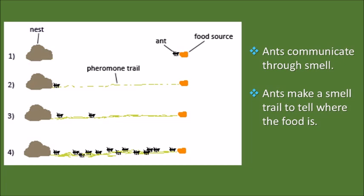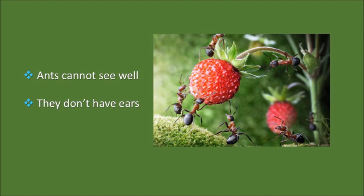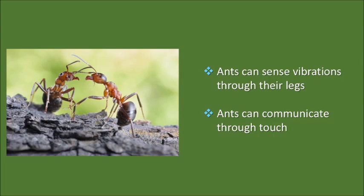Ants cannot see well and cannot hear well because they don't have ears. However, they can feel vibrations using their legs — if you are walking nearby, the ant can feel the vibrations your footsteps generate and understand that something is happening. Ants can also communicate by touching: you will often see two ants come together, move their antennas, and touch one another. That's how they talk — not making sound, but communicating through touch.